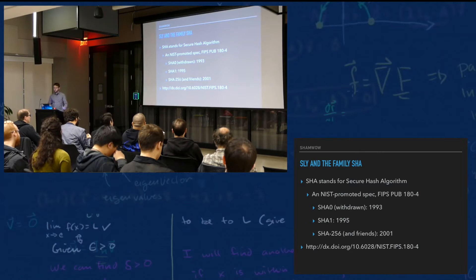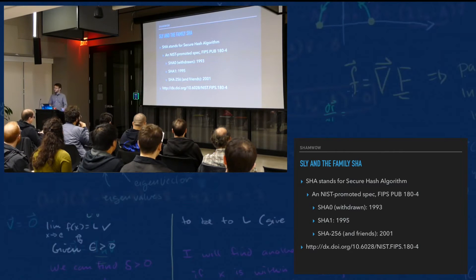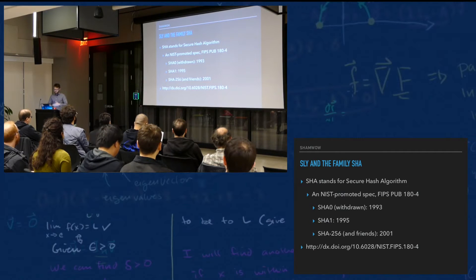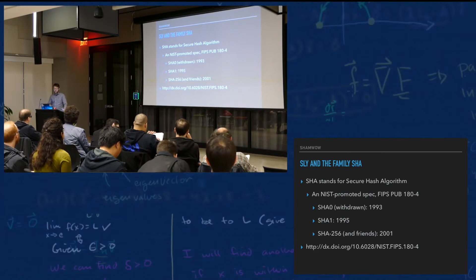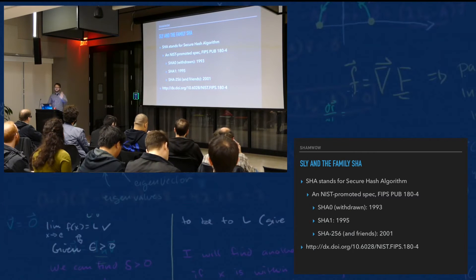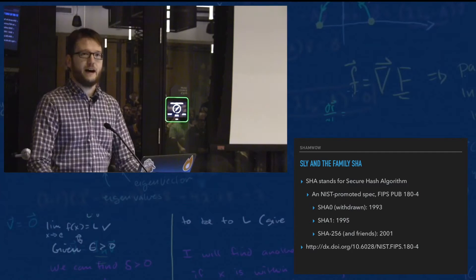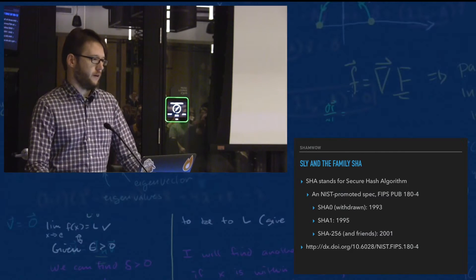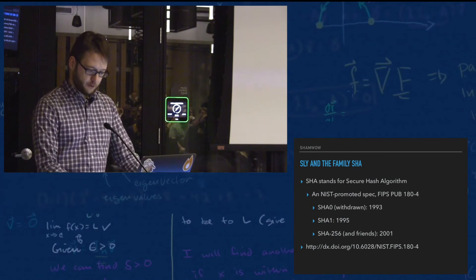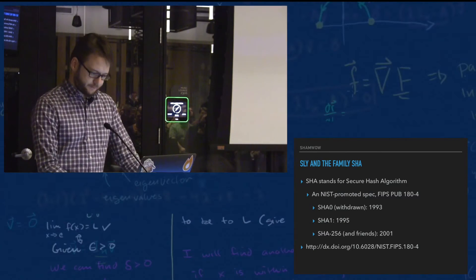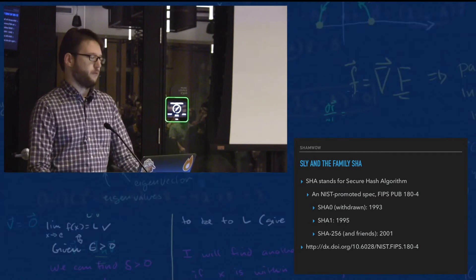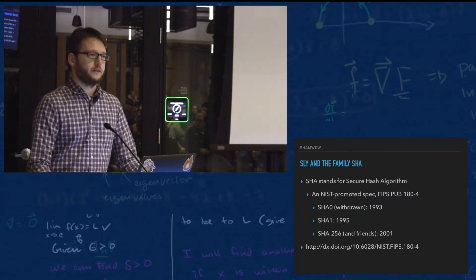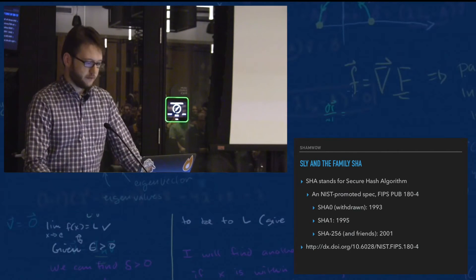SHA stands for Secure Hash Algorithm — or Standard Hash Algorithm, I've also seen it used. When it was first being written, they didn't think they'd have more than one. SHA was released in 1993 and withdrawn shortly thereafter — NIST, the National Institute of Standards and Technology, put it out and immediately said, wait, don't use that, we messed up. They came back with SHA-1 in 1995. Turns out there's a very subtle flaw in SHA-0 which allows it to be reverse engineered much more quickly. It came out of the Capstone Project — the same project that gave the world the Clipper Chip.